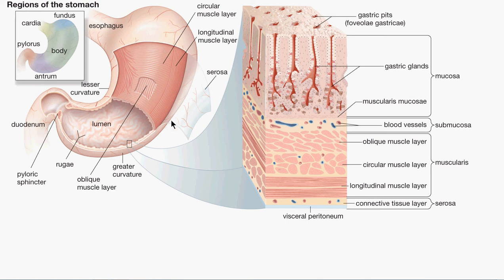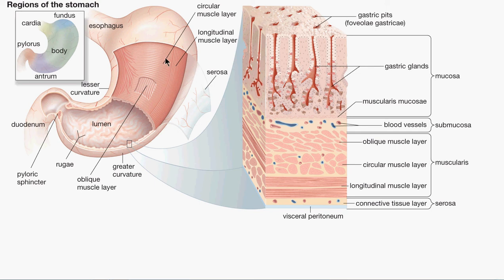In this diagram the stomach is cut open so we can see its muscle layers. Throughout the digestive system, a circular layer and a longitudinal muscle layer are present. What is unique and special about the stomach is that it also has an oblique muscle layer, which is not present in any other part of the digestive system. These three layers together mix and churn food thoroughly with gastric juice.